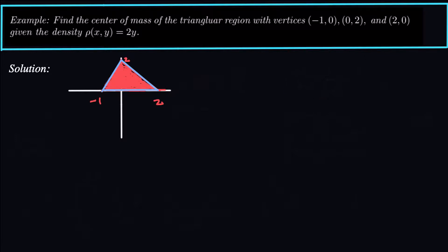The region of integration is going to tell us everything we need to know as far as the bounds. The region has vertices negative 1, 0; 0, 2; and 2, 0. We need to integrate over this region — it's going to be either a type 1 or type 2 setup. Type 1 would take y from 0 up to the two lines, giving us two double integrals. However, type 2 bounds would have x going from the left line over to the right line. So let's set this up with type 2 bounds.